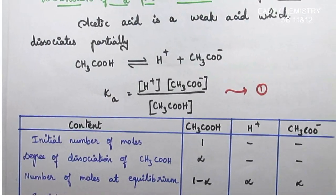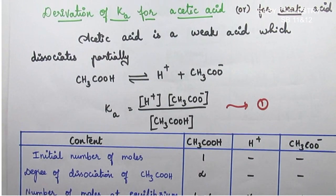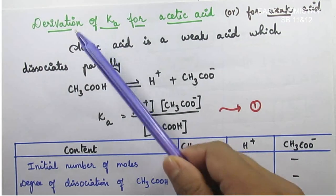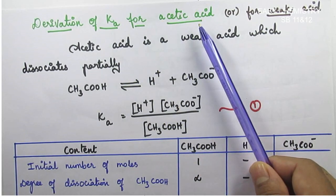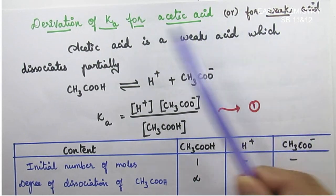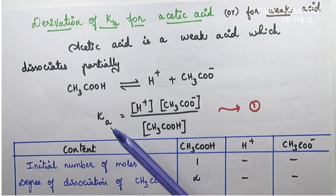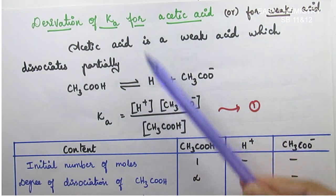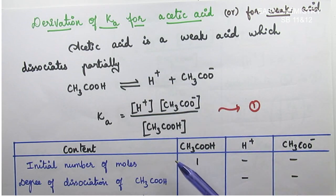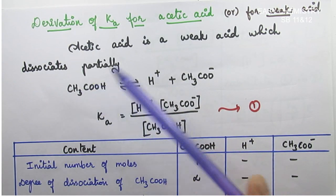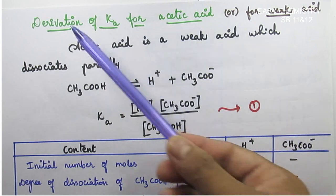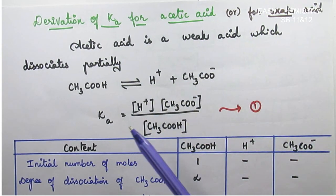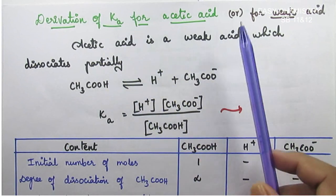How to get Ka — how do you derive this? Derivation of Ka for acetic acid. Acetic acid is a weak acid. If you consider a strong acid, it gives 100 H⁺ ions; but acetic acid is a weak acid, so it gives less than 100 H⁺ ions — it is partially dissociated, not completely dissociated.